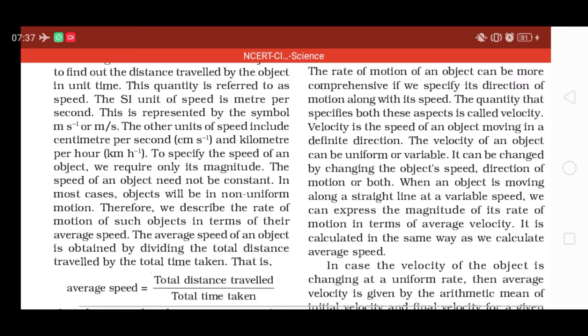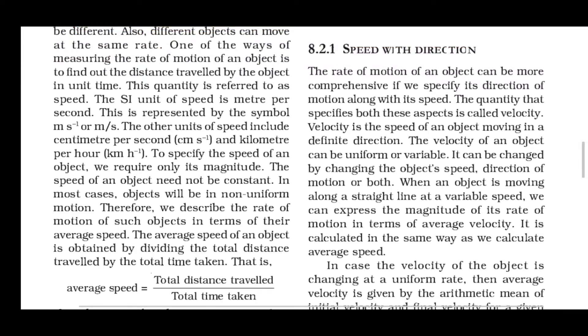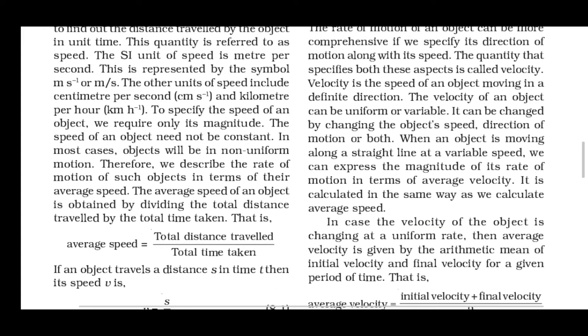Velocity is the speed of an object moving in a definite direction. एक particular direction में speed को कहें तो वो होगी velocity। The velocity of an object can be uniform or variable — जैसे speed uniform और variable दोनों हो सकती है, उसी तरीके से velocity भी हो सकती है। बस इतना different है कि velocity में direction को include करते हैं और speed में नहीं।